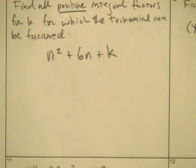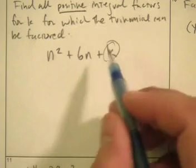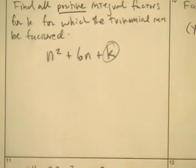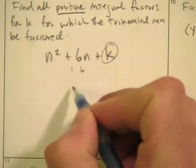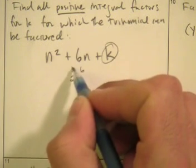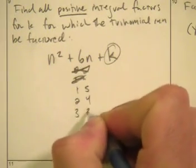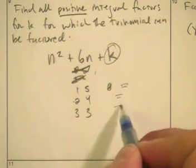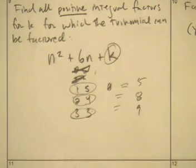This problem says something a little different: find all positive integral values for k. Since the constant has to be positive, the two factors must be of the same sign — and since k must be positive, both numbers are positive. The only pairs that sum to 6 with both positive are: 1 and 5, 2 and 4, 3 and 3. So the possible products k are 5, 8, and 9.